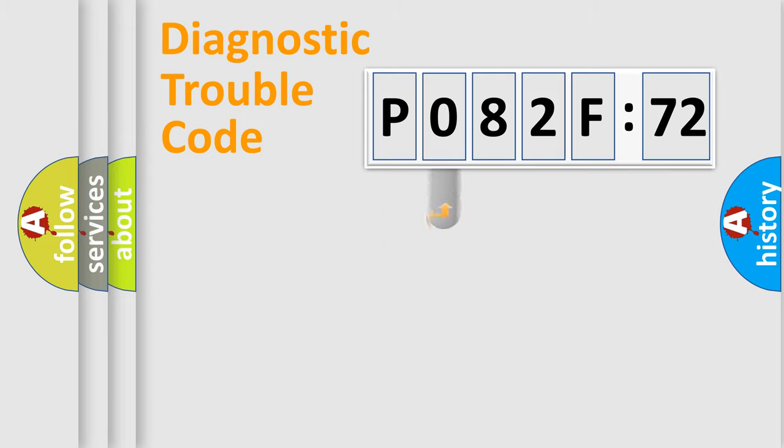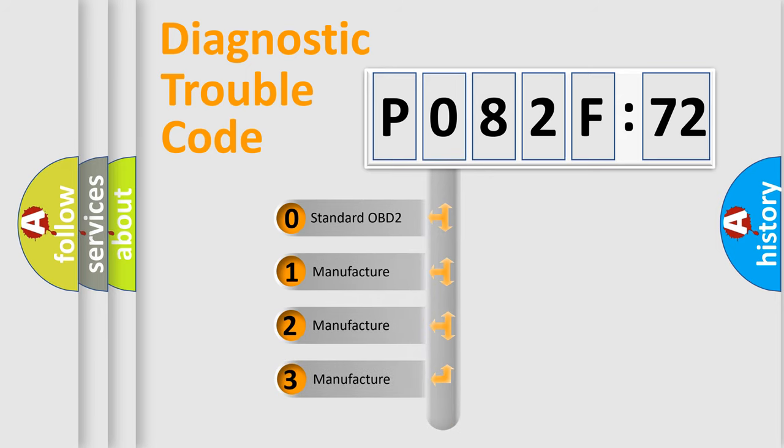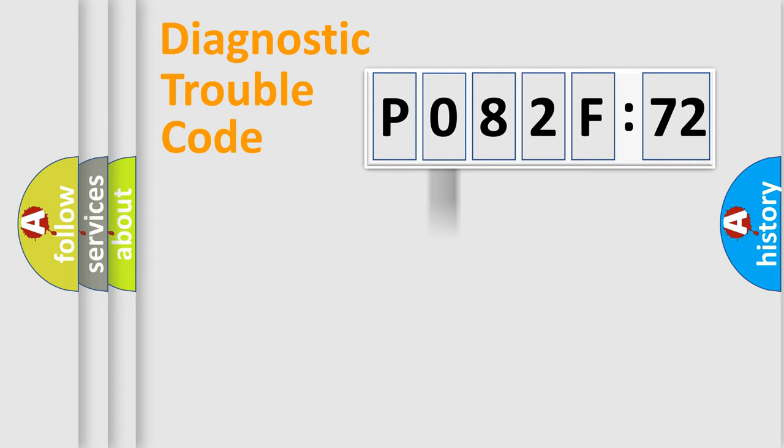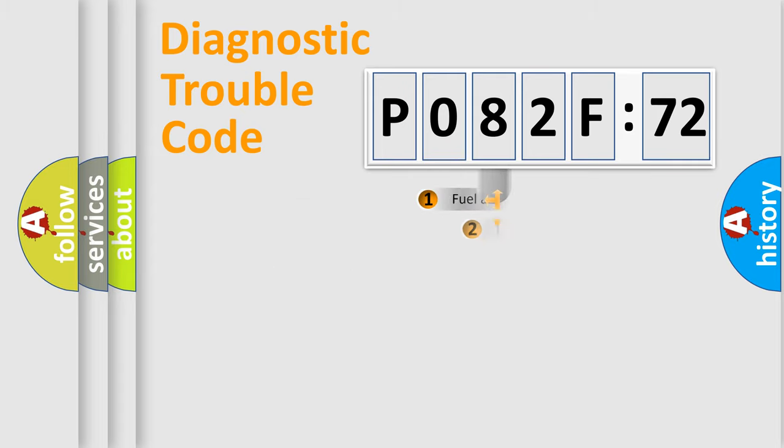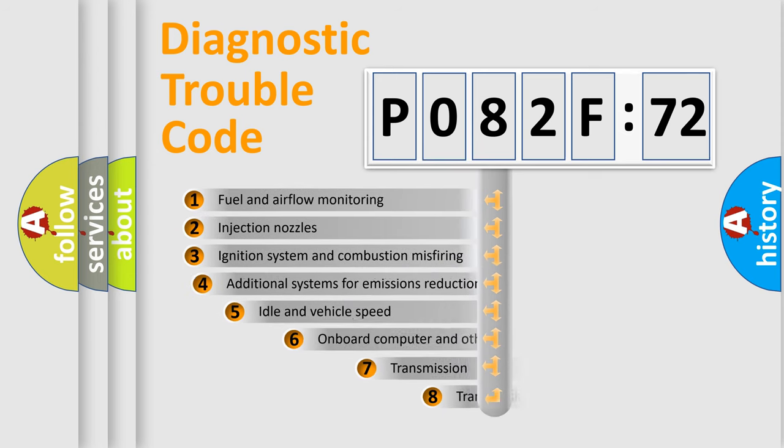The third character specifies a subset of errors. The distribution shown is valid only for the standardized DTC code. Only the last two characters define the specific fault of the group. The add-on to the error code serves to specify the status in more detail.